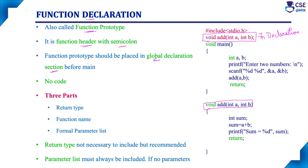This function prototype should be placed in the global declaration section. The global declaration section is placed between the header file section and the main function. Here we can declare functions as well as global variables — variables we want to use inside main as well as user defined functions. That is called a global variable; we can use it anywhere in the program.